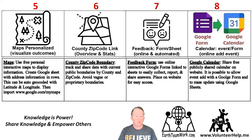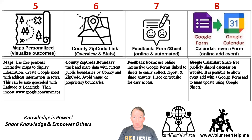Tools five to eight include personalized maps, county and zip code tracking of information, feedback using a Google form, and calendar event adding. Starting with maps, Google My Maps is a free option that allows rows of data with addresses to be automatically mapped into an interactive map. That map could graphically show your reach, where you've done projects, where you've delivered products, and it can include pictures or videos — really useful for the outside world or your members to understand what you've done.